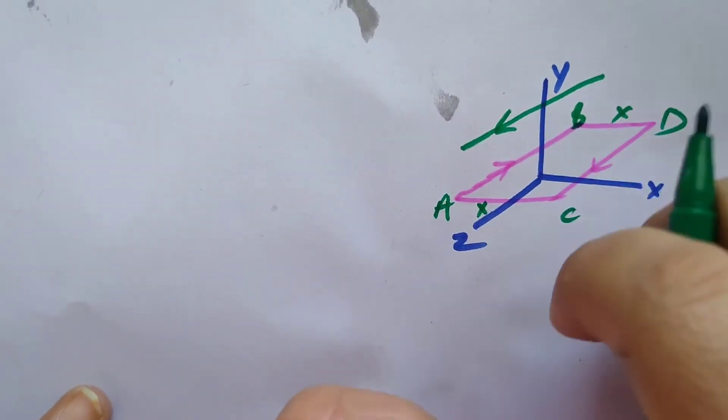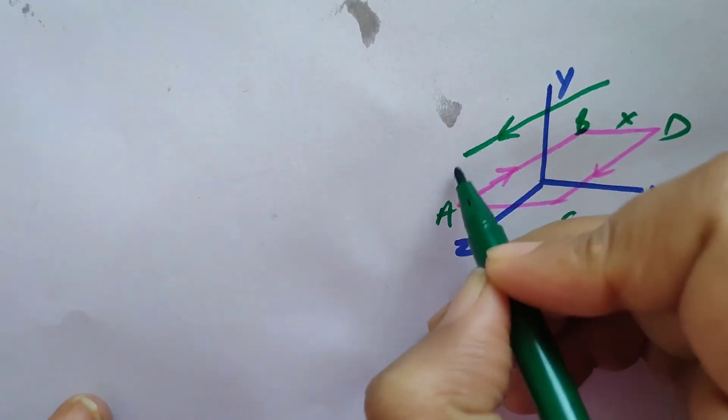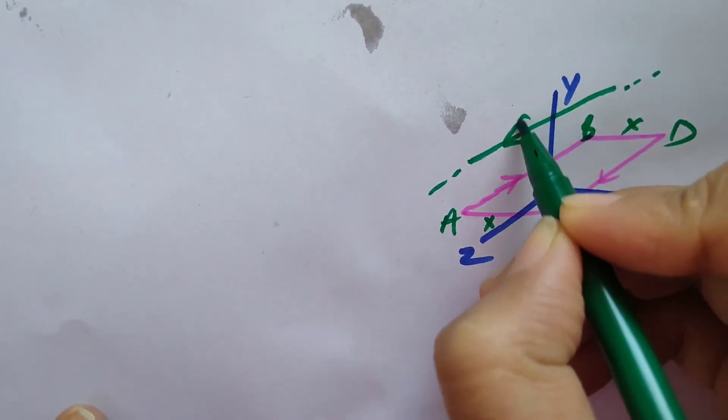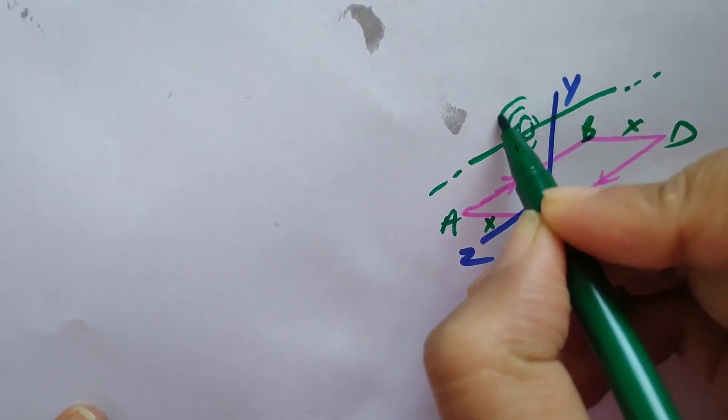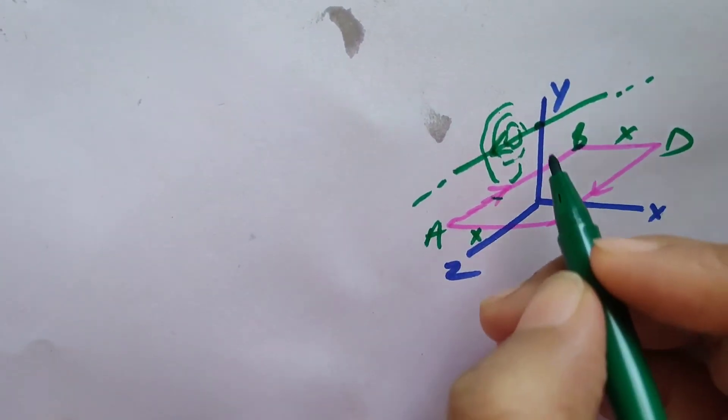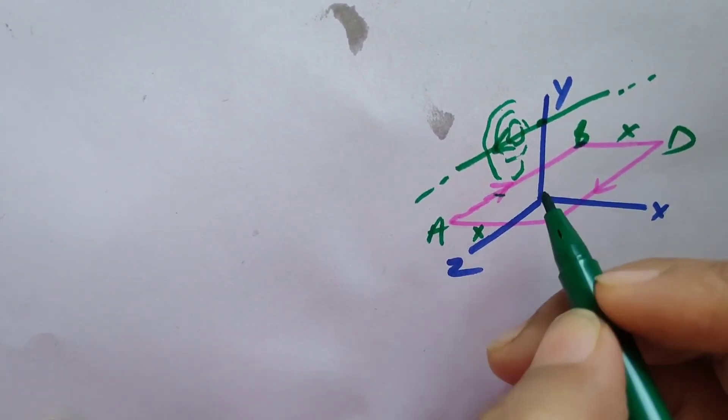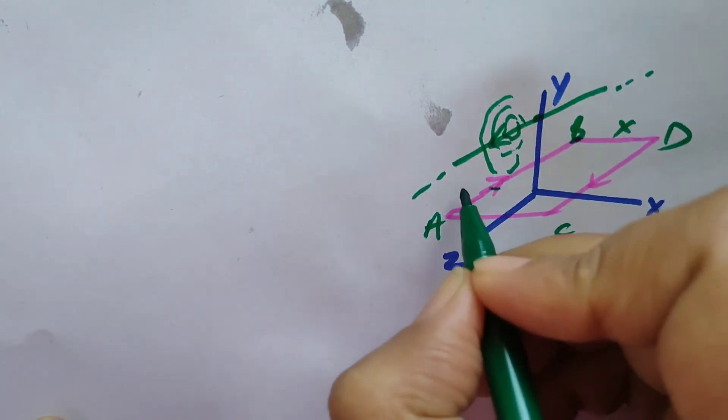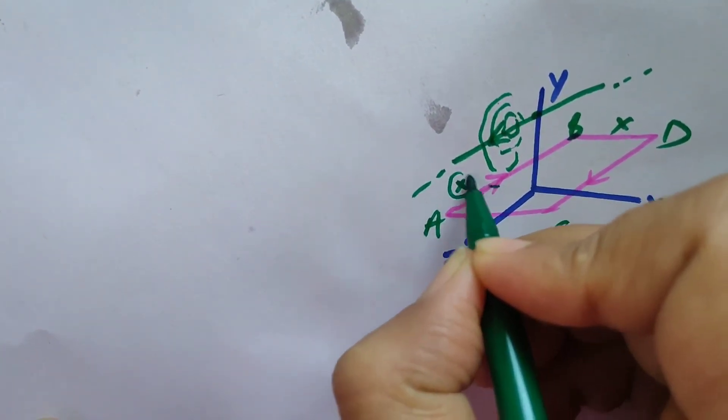The magnetic field lines for this wire will be in the form of concentric circles. Because of this wire, magnetic field for AB will be inward, so we will indicate with the cross sign.